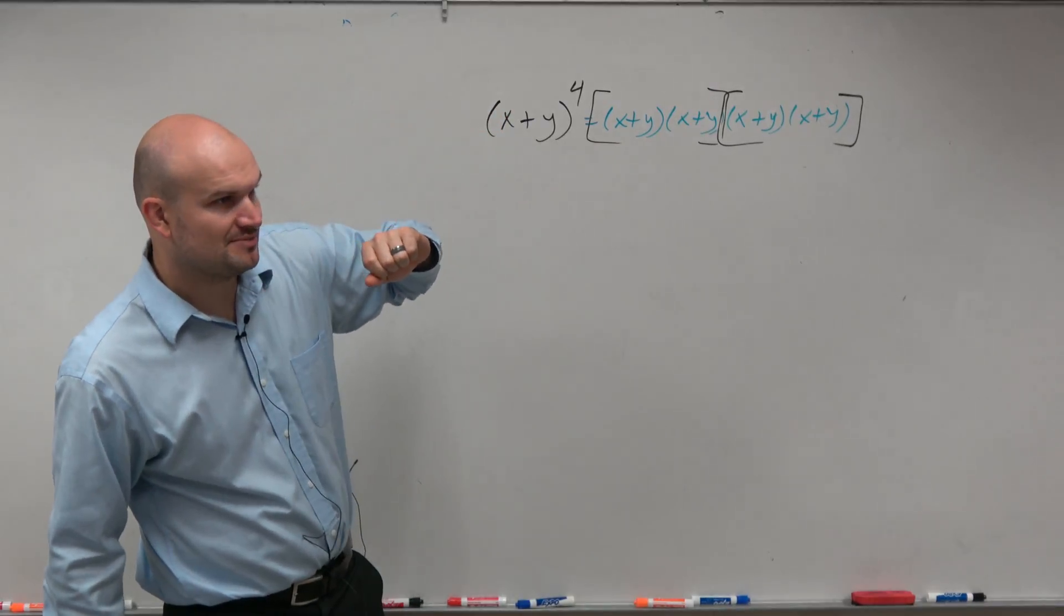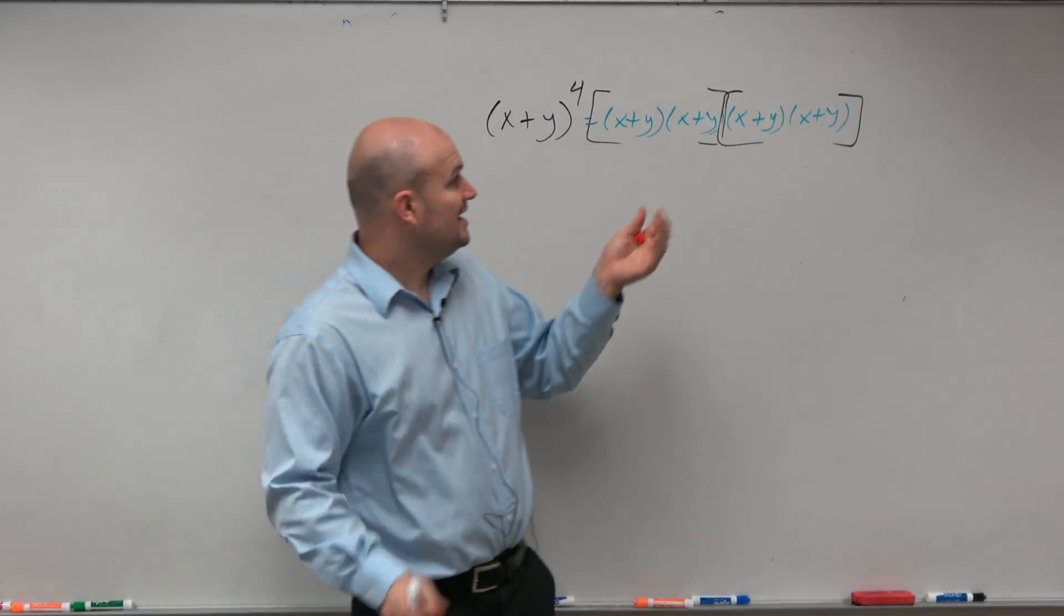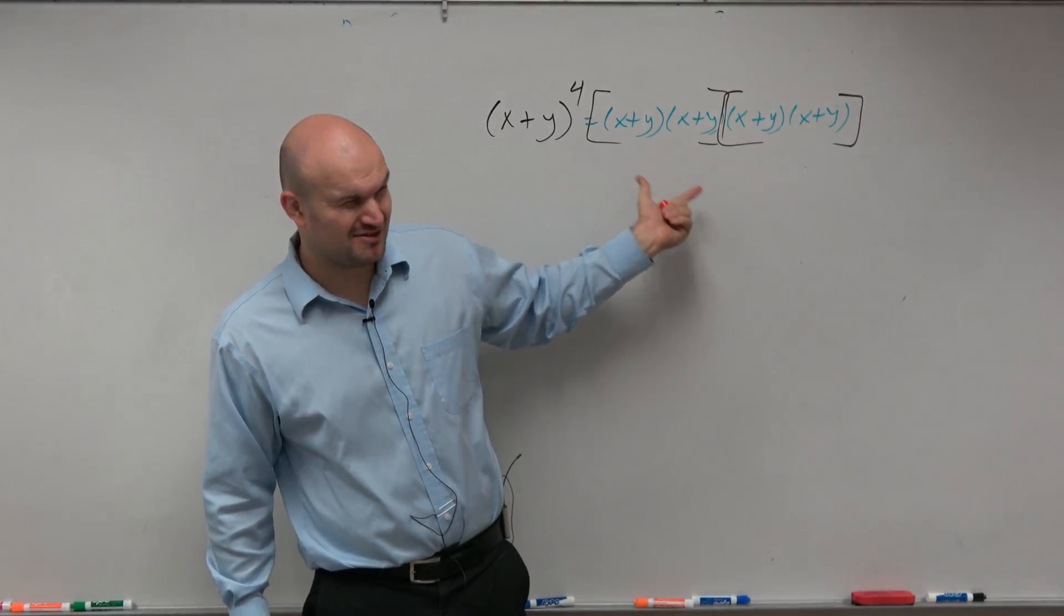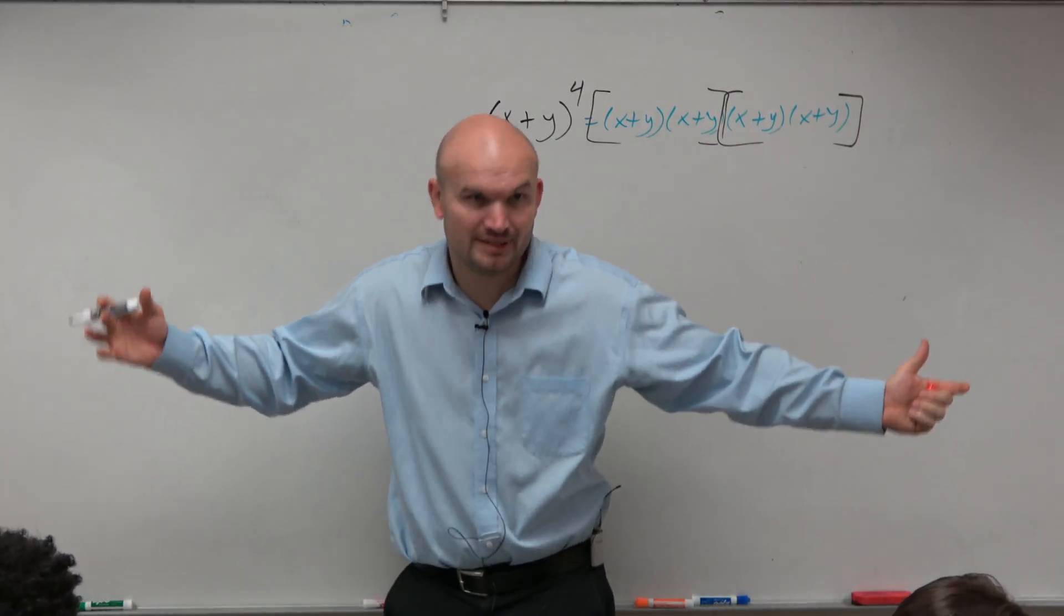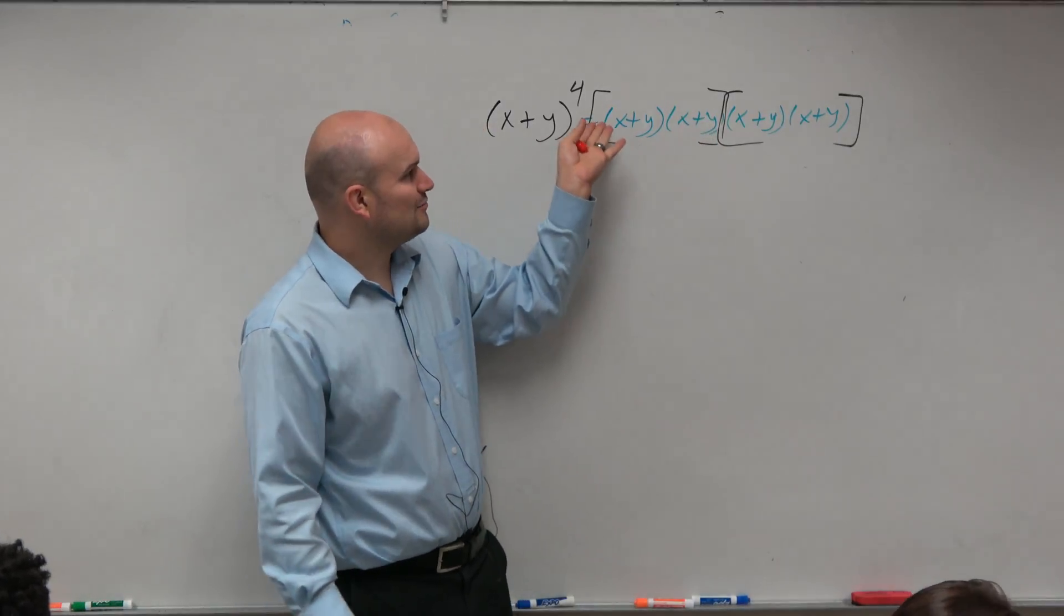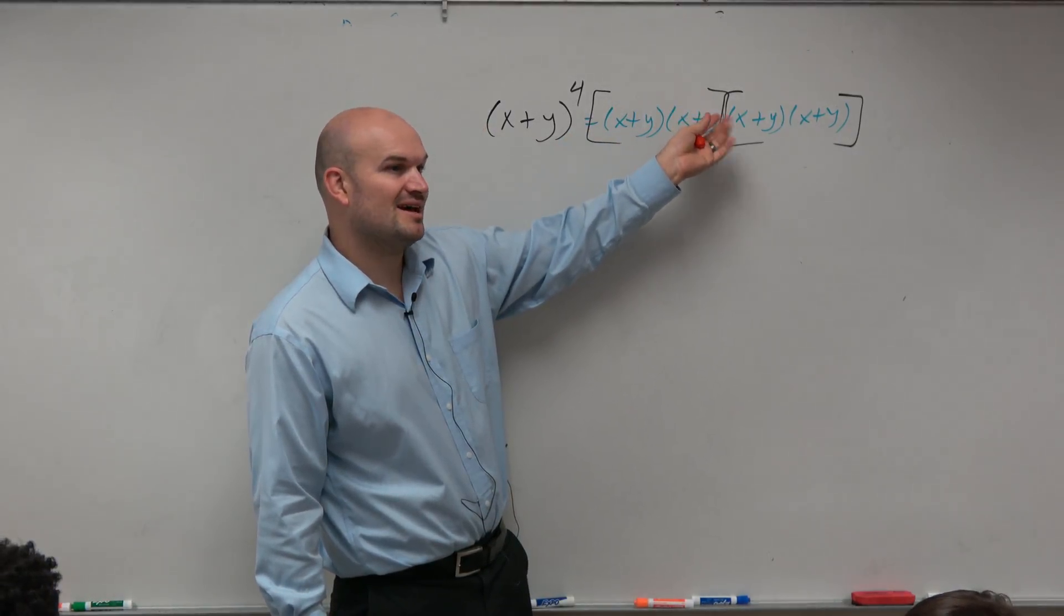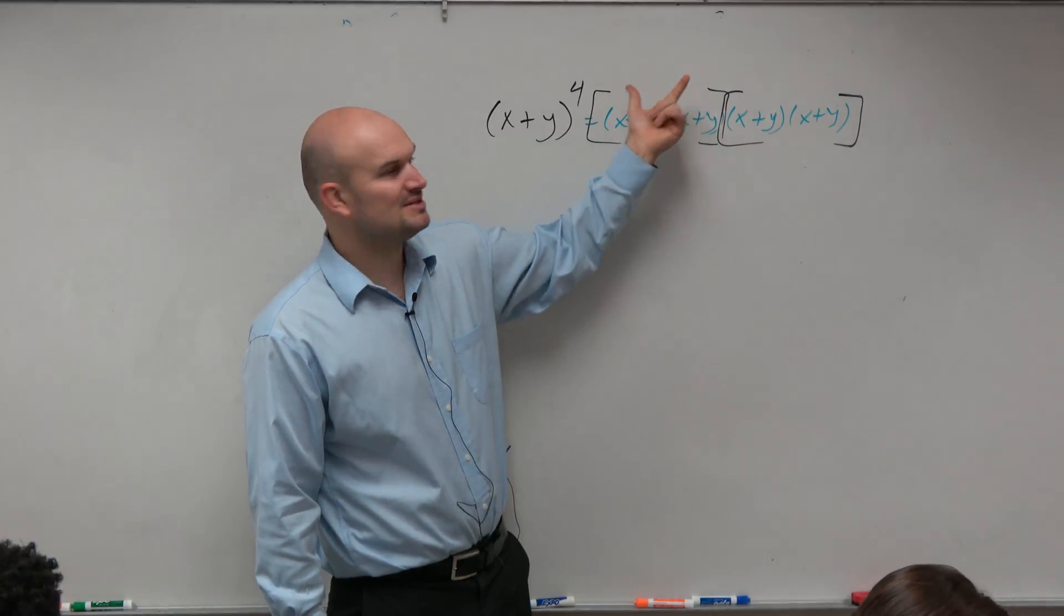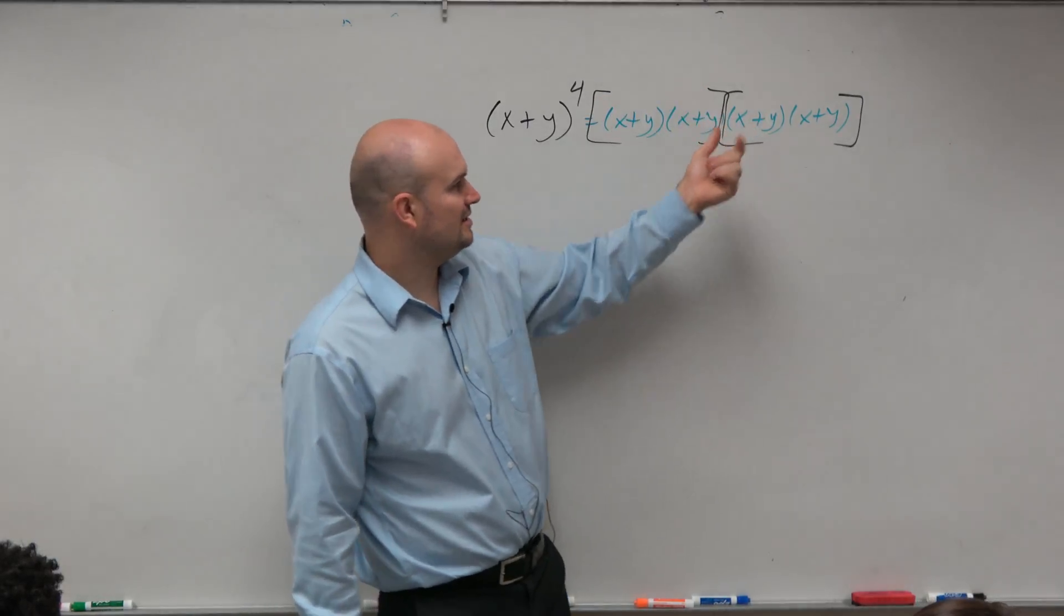So x plus y times x plus y. Now hopefully you guys, if you remember, this is a binomial squared. Remember last class, that's what we did. So in reality, we're squaring the first two terms, squaring the last two terms, and then the middle term, does anybody remember what it was? It was two times the product of the outer and the inner.